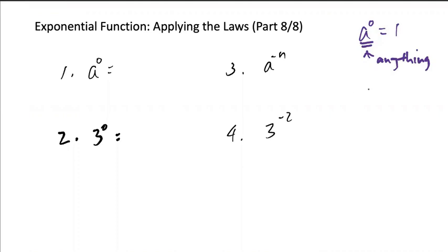And then we have a negative n would give us one over a^n. So anything with a negative, I would have to go one over.